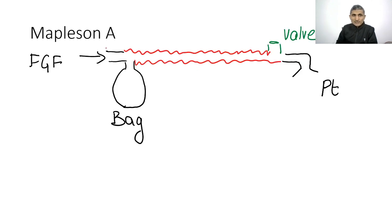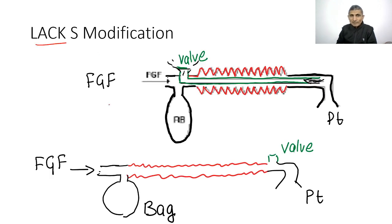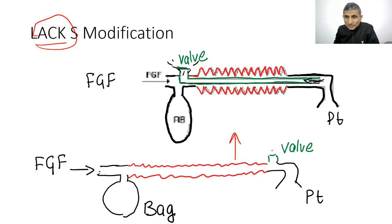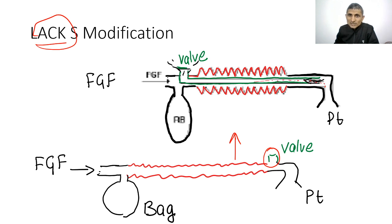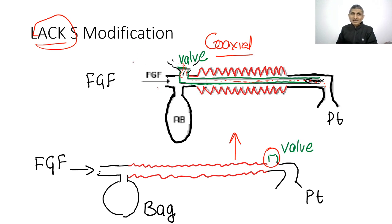The Mapleson A (Magill circuit) has fresh gas flow from one end with a valve toward the patient. The Lack circuit is a modification of Mapleson A — the valve is shifted to the machine end and expiratory gases vent through an inner pipe (tube within tube), making it a coaxial circuit. The Lack circuit is a modification of Mapleson A.